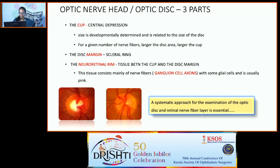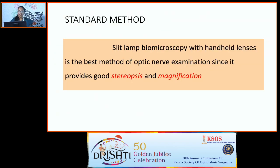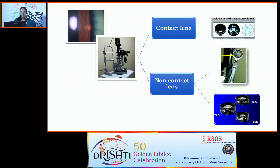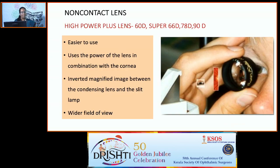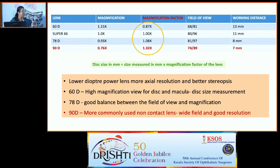A systematic approach for examination of the optic disc and retinal nerve fiber layer is essential. The standard method is slit lamp biomicroscopy with handheld lenses, which gives magnification as well as stereopsis. We use contact lenses such as the Goldmann three-mirror lens, and non-contact lenses including the high-minus ruby lens and high-plus lenses. The most commonly used are the 60D, 66D, 78D, and 90D lenses. Lower diopter lenses give more axial resolution and better stereopsis; 60D gives high magnification good for size measurement, 78D gives a good balance, and 90D is most commonly used for wide field and good resolution.